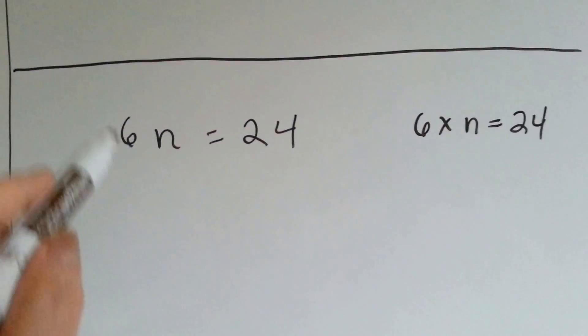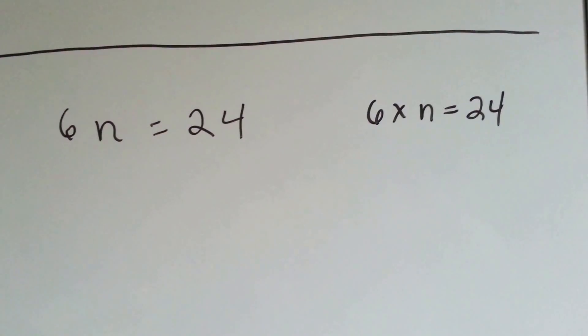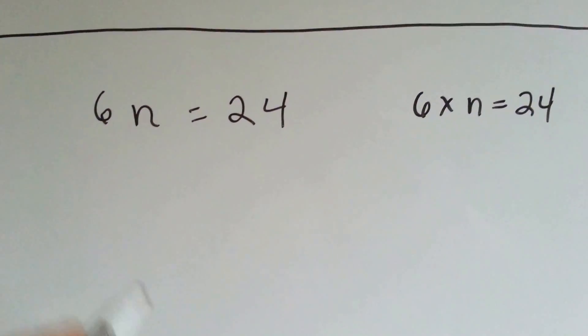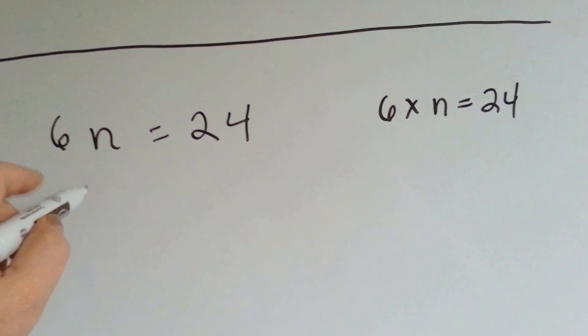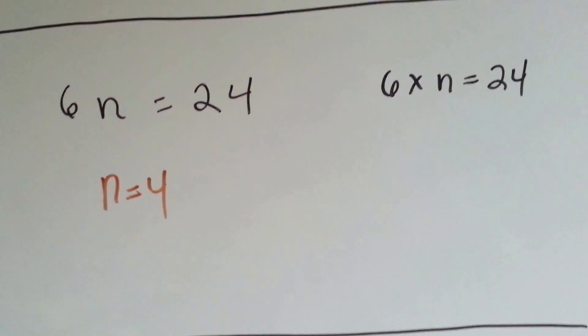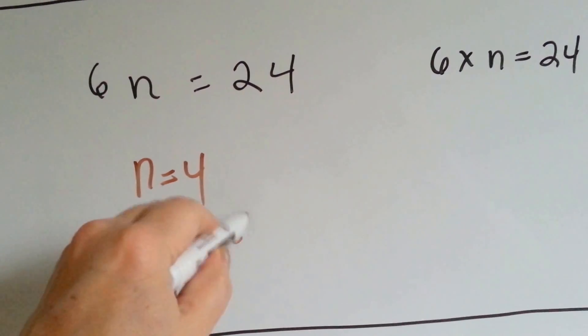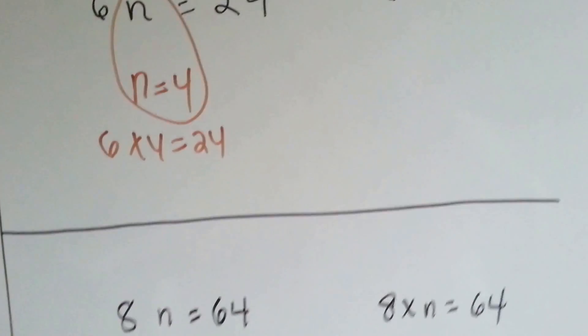How about this one? Six times n equals twenty-four. Do you know your six times table? Six times what equals twenty-four? What could the n be? Well, n equals four in this one also. Six times four equals twenty-four. So, n is equal to four.